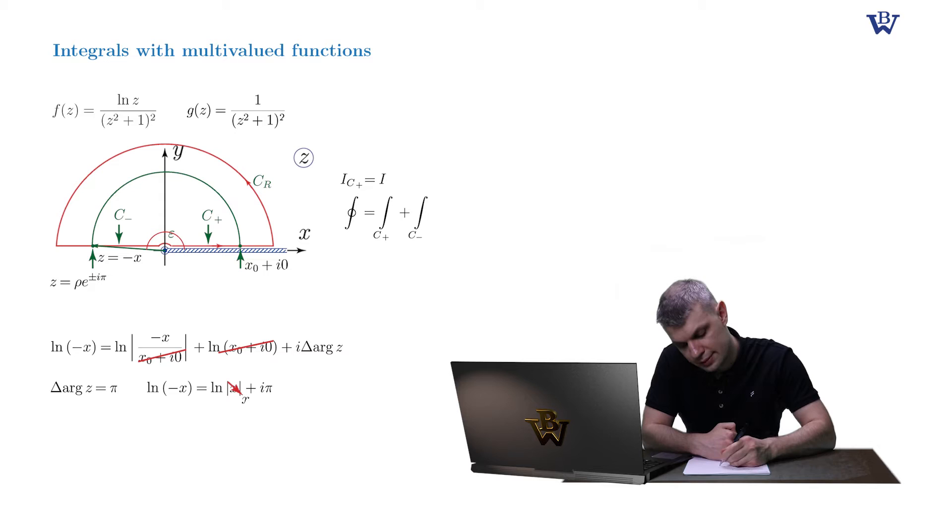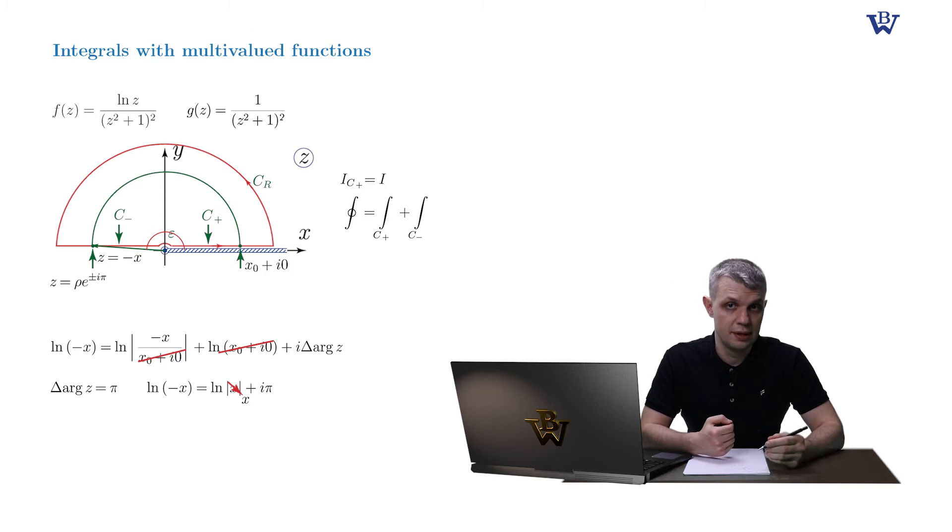Or log of x. So now we see that the negative real axis parameterization consistent with the choice of our regular branch is z equals rho times e to i pi, not minus i pi or 3i pi or something. So let's write down the integral itself.